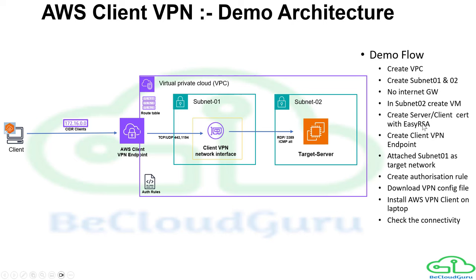Subnet 01 will be our target network. Before that, we'll create server and client certificates for mutual authentication, then upload those to AWS Certificate Manager (ACM). We'll create the Client VPN endpoint pointing to ACM for authentication, attach Subnet 01 as the target network, create an authorization rule, update the route table with split routing, then download the VPN client and client configuration file.